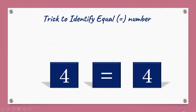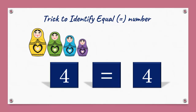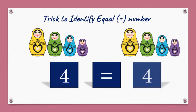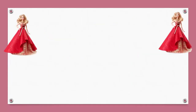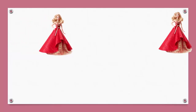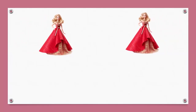Now let's learn equal. Here are 4 dolls and on the other side there are again 4 dolls. When the numbers are the same on both sides, it is called equal. Here is 1 doll and here is 1 more doll — 1 and 1. When the number is the same, we put the equal to sign.